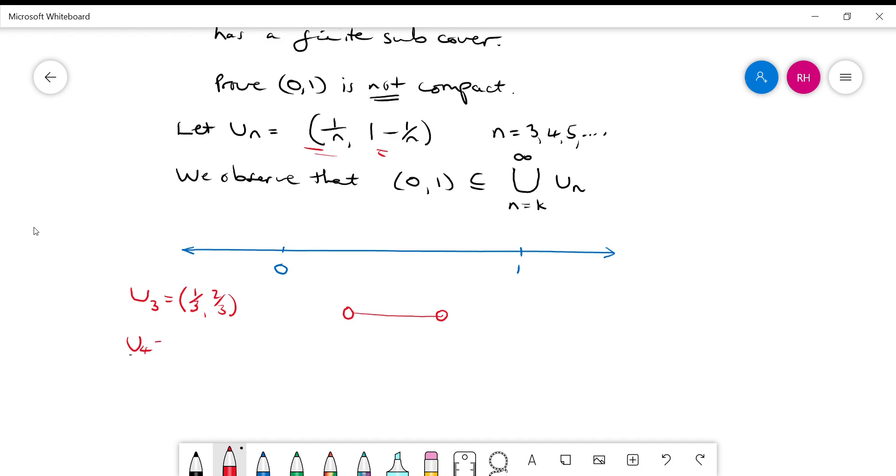U_4, so let's write that in. And U_100 will equal the open set from 1/100th to 99/100ths. So that will go from about here to about here. So I hope you can see that when we take an infinite number of these, then it will cover (0,1).